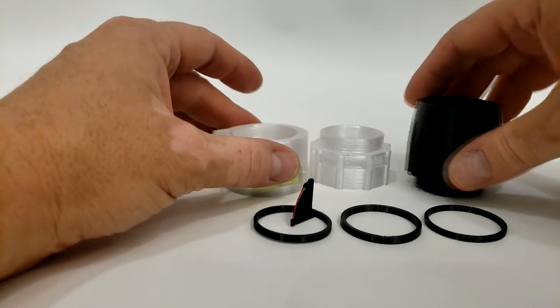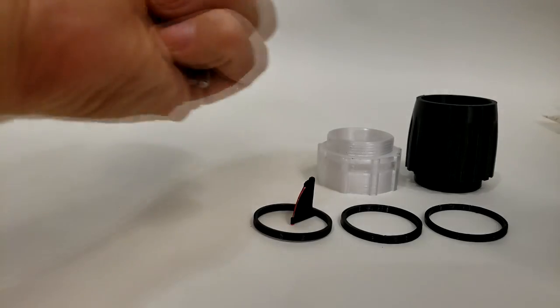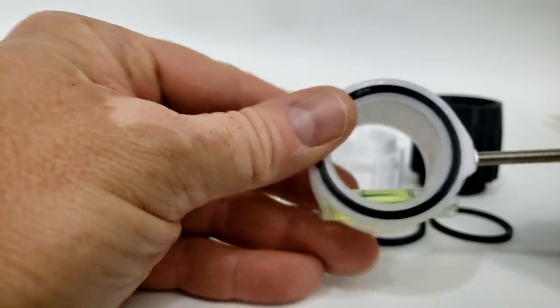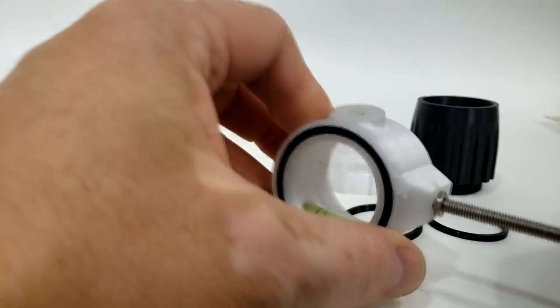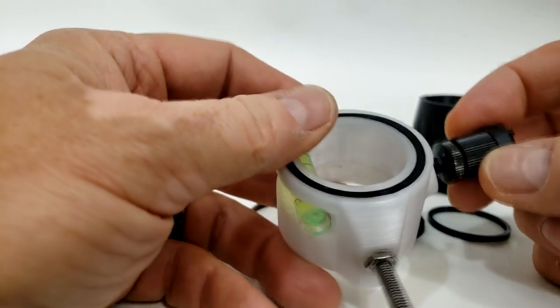Now we'll go over some optional parts here that I would highly recommend. Now the scope housing itself is tapped up top for a one-quarter twenty-eight thread, which will accept a light one-quarter twenty-eight.